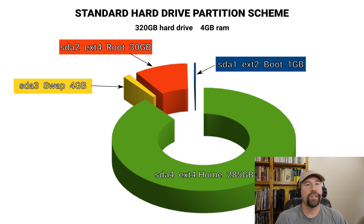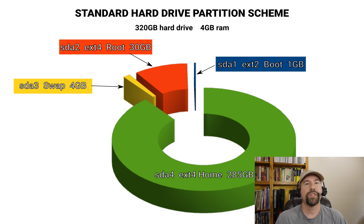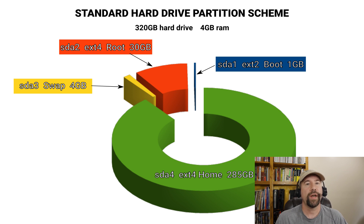Our final partition is the home partition, and it encompasses all the remaining space on the hard drive. Once again we've formatted to EXT4, but like the root partition, XFS and BTRFS are fine as well. One thing I want to point out is that the swap space is located between the home and root partition, so read and write times going back and forth are going to be minimized as much as possible.